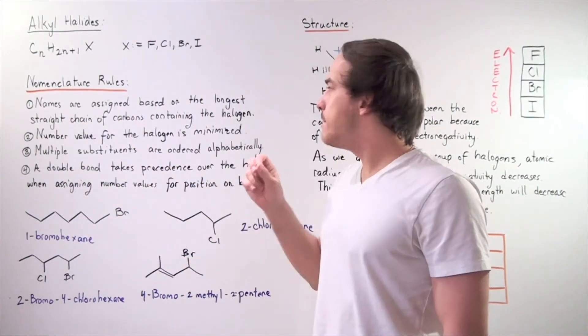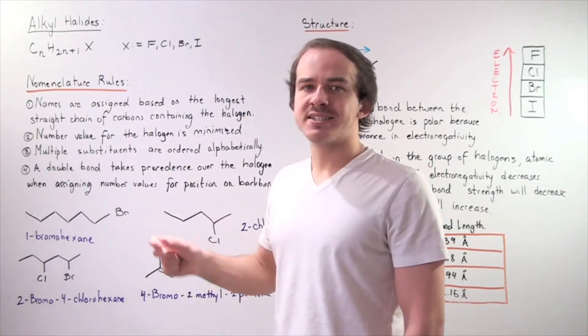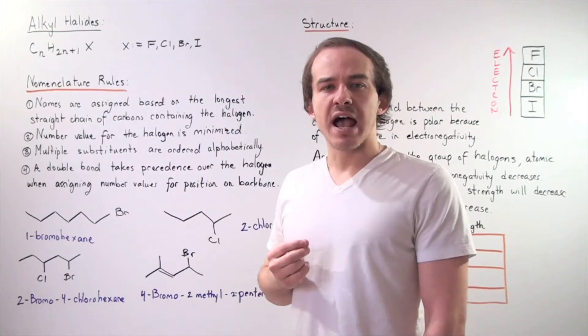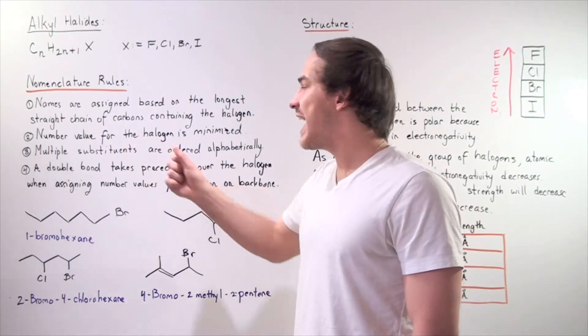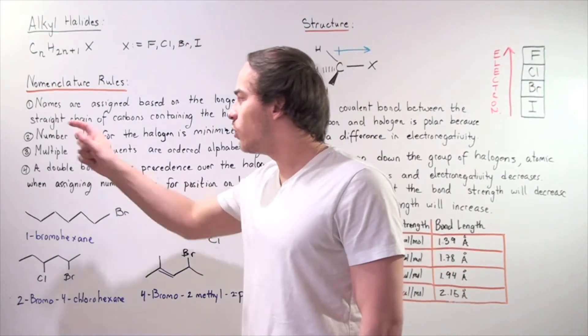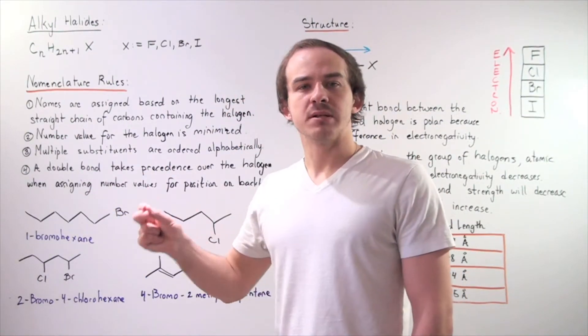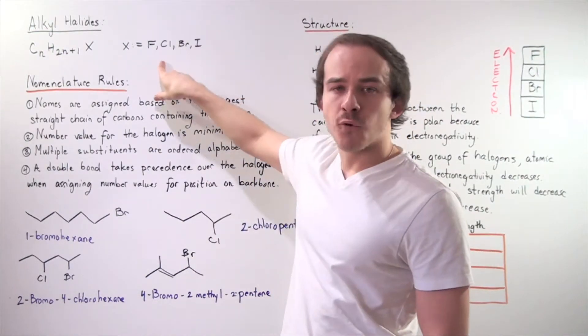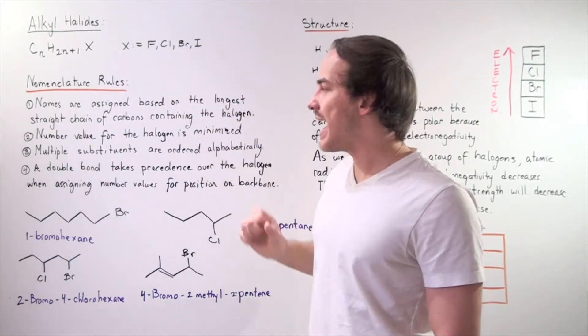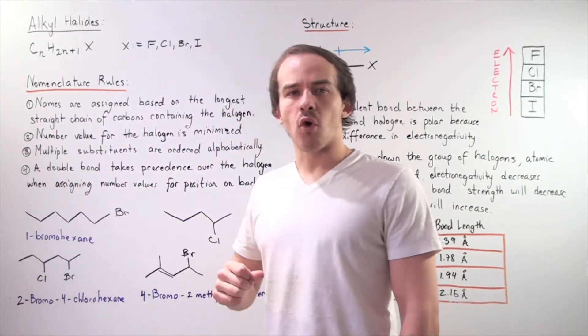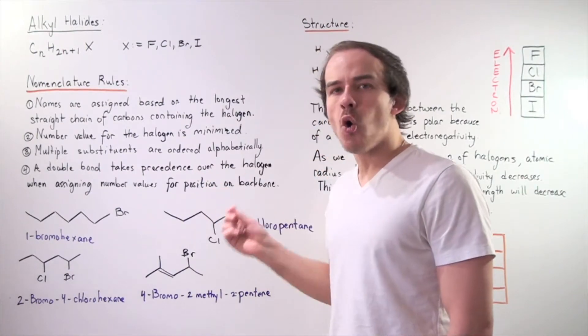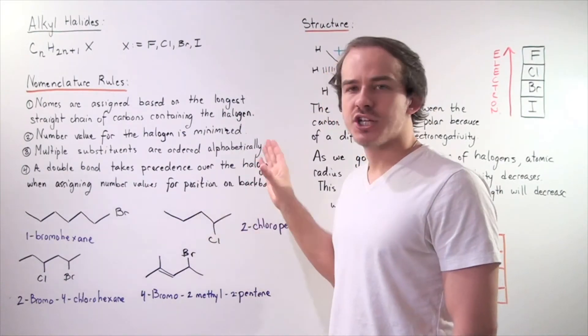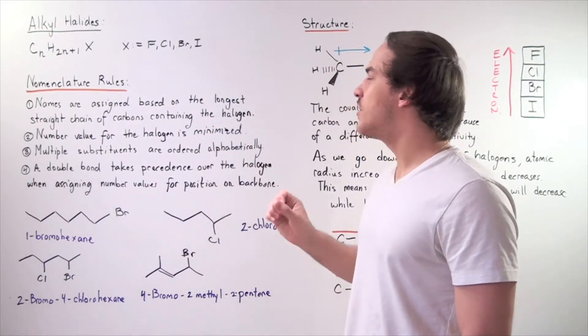Let's look at the following four rules. Rule number one, names are assigned based on the longest straight chain of carbons containing that halogen. Rule number two, the number value or position value for the halogen must be minimized. Rule number three, multiple substituents are ordered alphabetically. In other words, bromine comes before chlorine because B comes before C in the alphabet. And rule number four, a double bond takes precedence over the halogen when assigning number values for your position on the backbone.